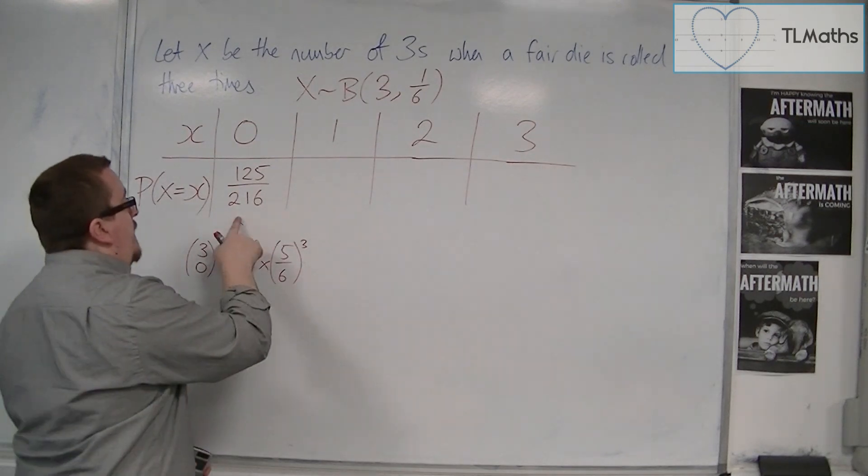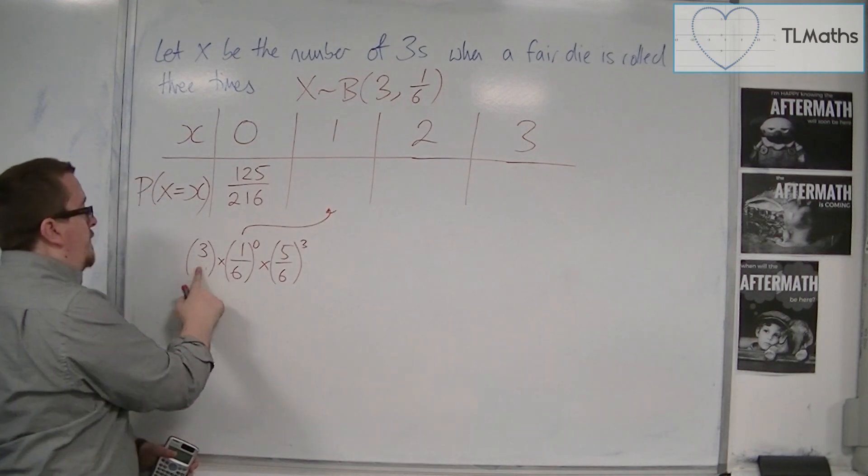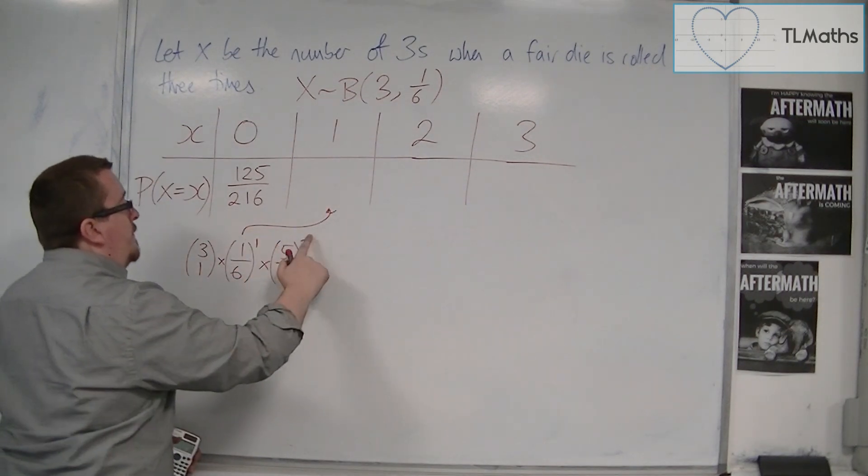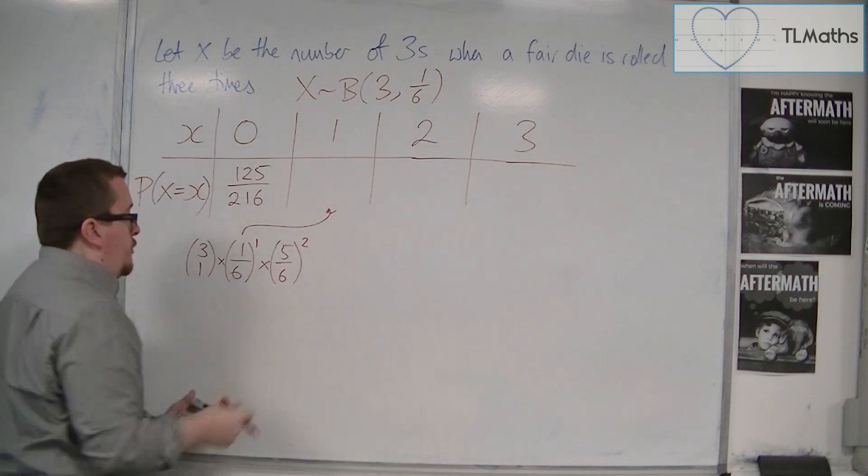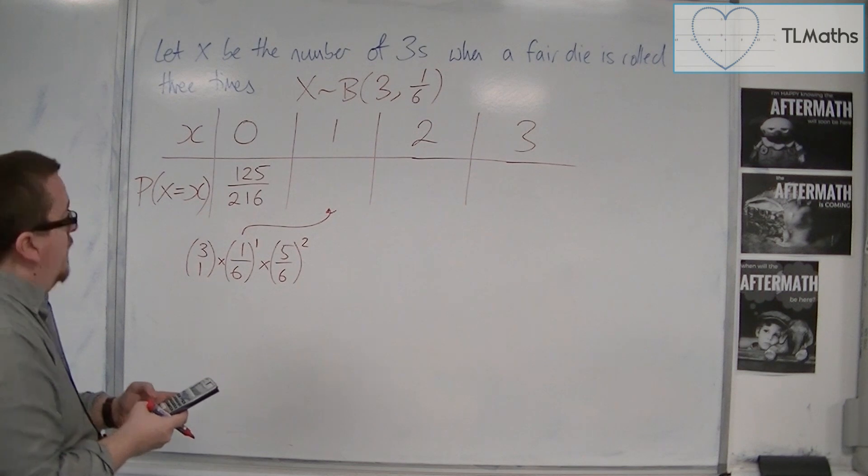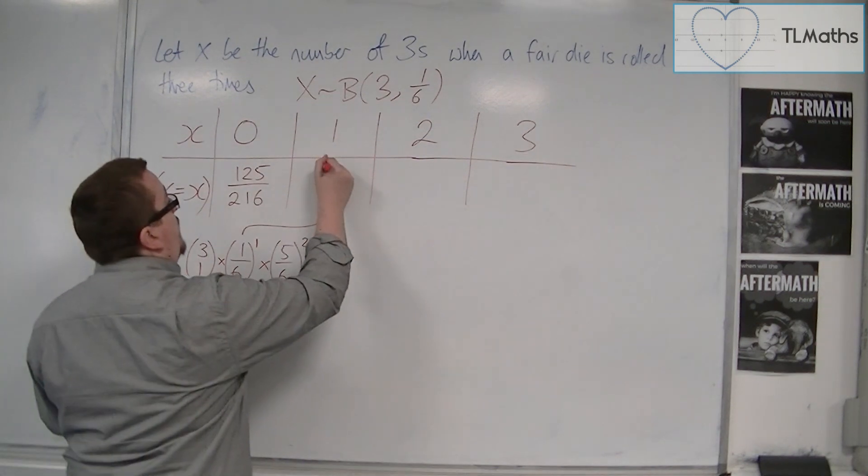And then let's change this up. Same formula, but now we're doing 3 choose 1, 1 sixth to the 1, and 5 sixths to the 2. So we've got 3 times 1 sixth, times by 5 sixths squared, which is 25 over 72.